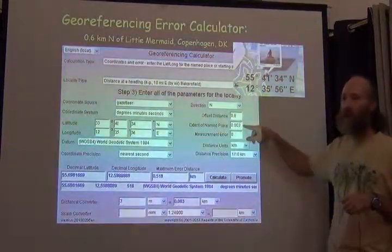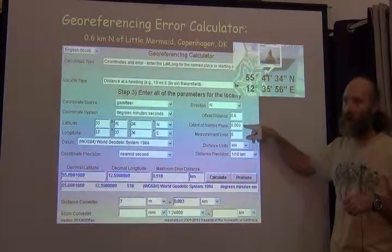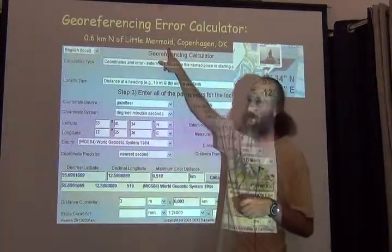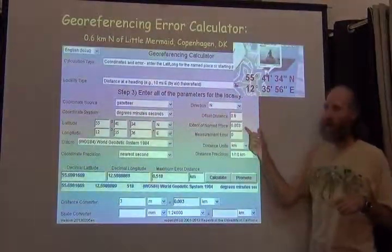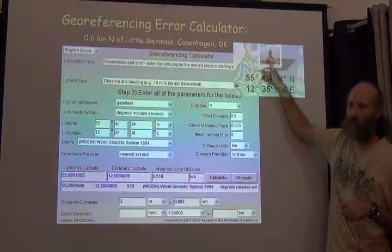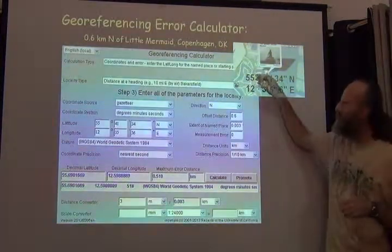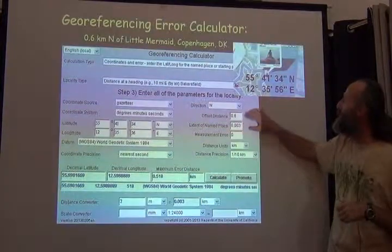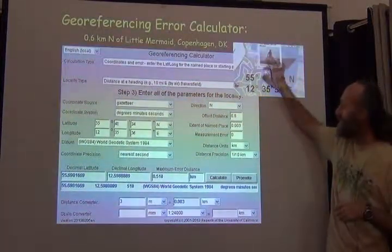Then I need to add a couple of other things. The first one is the extent of the named place. What is the named place? The named place is the Little Mermaid. How big is the Little Mermaid? Well, let's say three meters across in radius. It's a little excessive, but it's okay. Three meters is how big it is across the Little Mermaid.